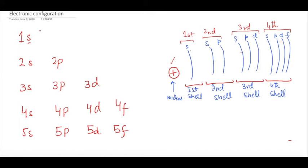If you don't know about shells, subshells, and orbitals, you should listen to my lecture number 1. Now, how do electrons fill in these subshells? There are three rules for filling electrons. The first rule is the Aufbau principle. The rule is: electrons first fill those orbitals which have less energy, or those subshells which are nearer to the nucleus. Look at this diagram.